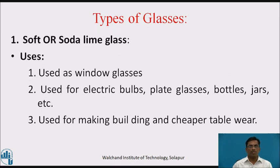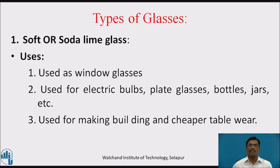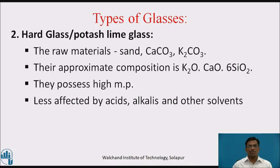Uses of soft glass: it is used as window glass, electric bulbs, plate glasses, bottles, jars, etc. It is also used for making buildings and cheaper tablewares.